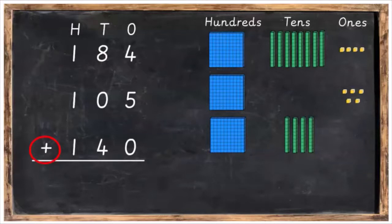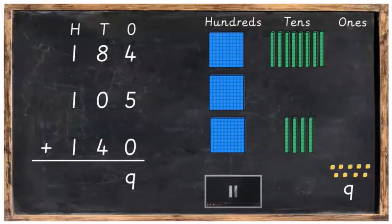Right, so we're going to start off by adding the ones. We're going to add four plus five plus zero. Four plus five plus zero is equal to nine. So we'll bring our Dean's blocks down to the bottom. Then we're going to go back over to our sum, four plus five plus zero is equal to nine. Press pause and get that much done, then press play afterwards.